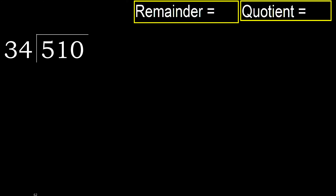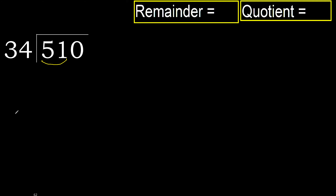510 divided by 34. 5 is less, therefore next. 51 is not less, therefore we work with 51.